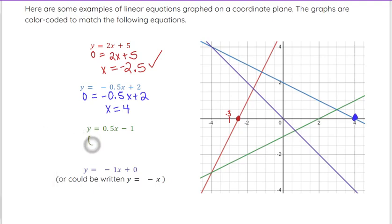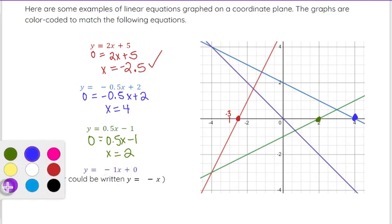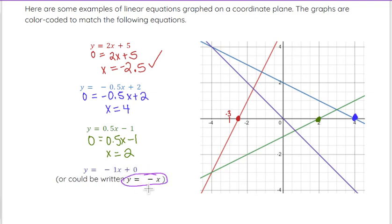For the green one, when you plug in 0 for Y and you were to solve that algebraically, you would end up with X equals 2. And with this green graph, it crosses at 2 on the X axis, so that matches. And then this bottom one, this purple one, Y equals negative 1X plus 0, that can be rewritten as just Y equals negative X, if you prefer.